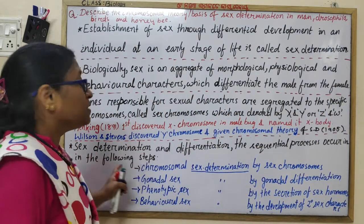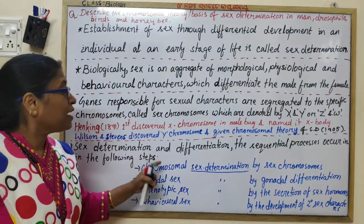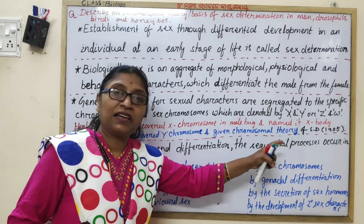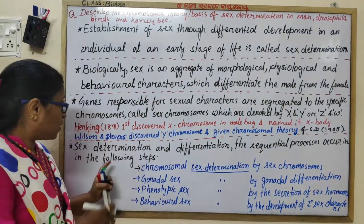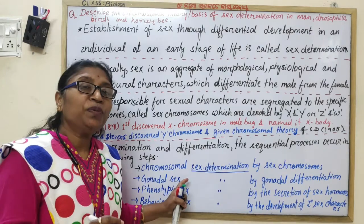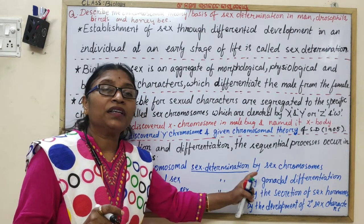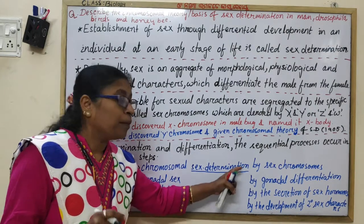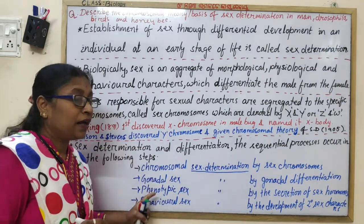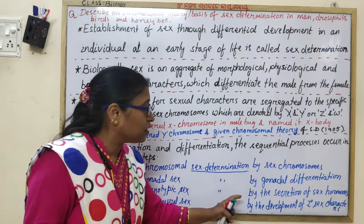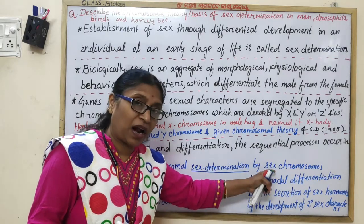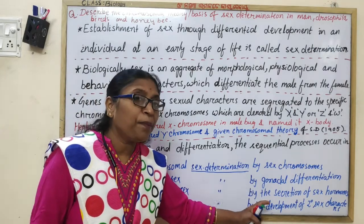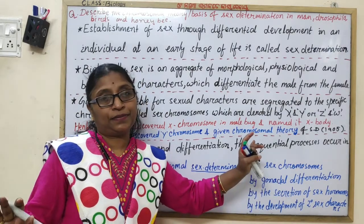Sex determination and differentiation are sequential processes occurring in the following steps: first, chromosomal sex determination by the sex chromosomes; second, gonadal sex determination by gonadal differentiation; third, phenotypic sex determination by secretion of sex hormones from the gonads; and fourth, behavioral sex determination by the development of secondary sex characters.